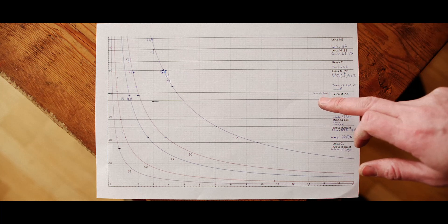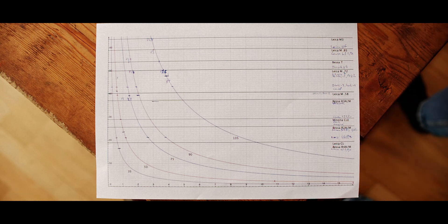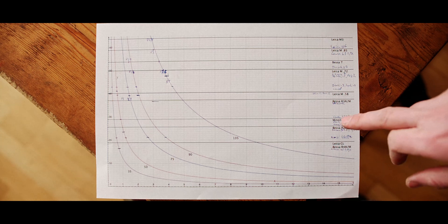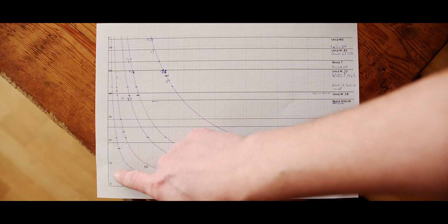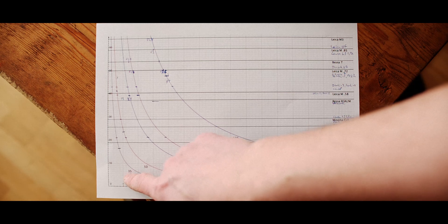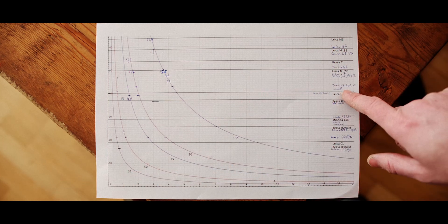Why this obsession over wide rangefinder bases? Well, mostly it has to do with longer lenses. You know, there are a lot of compact cameras that have had really short effective base lengths. Let's move on.